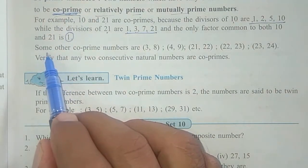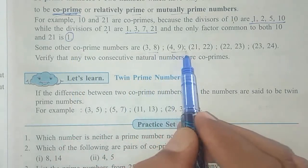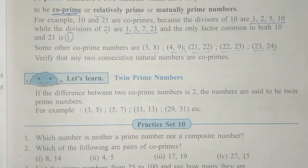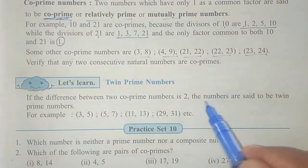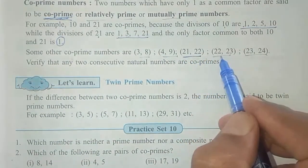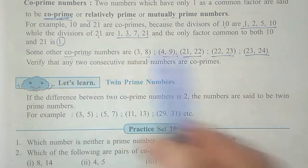Some other co-prime number pairs are: 3 and 8, 4 and 9, 21 and 22, 22 and 23, 23 and 24. If you observe carefully, these are consecutive numbers — one after the other. Consecutive natural numbers are always co-prime numbers.